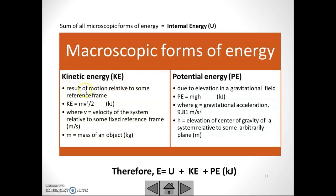Kinetic energy is the result of motion relative to some reference frame. The equation is: KE = mv²/2, where v is the velocity of the system and m is the mass. Potential energy is due to elevation in a gravitational field. The equation is: PE = mgh, where m is mass, g is gravitational acceleration, and h is the elevation of the center of gravity relative to some arbitrary reference plane.